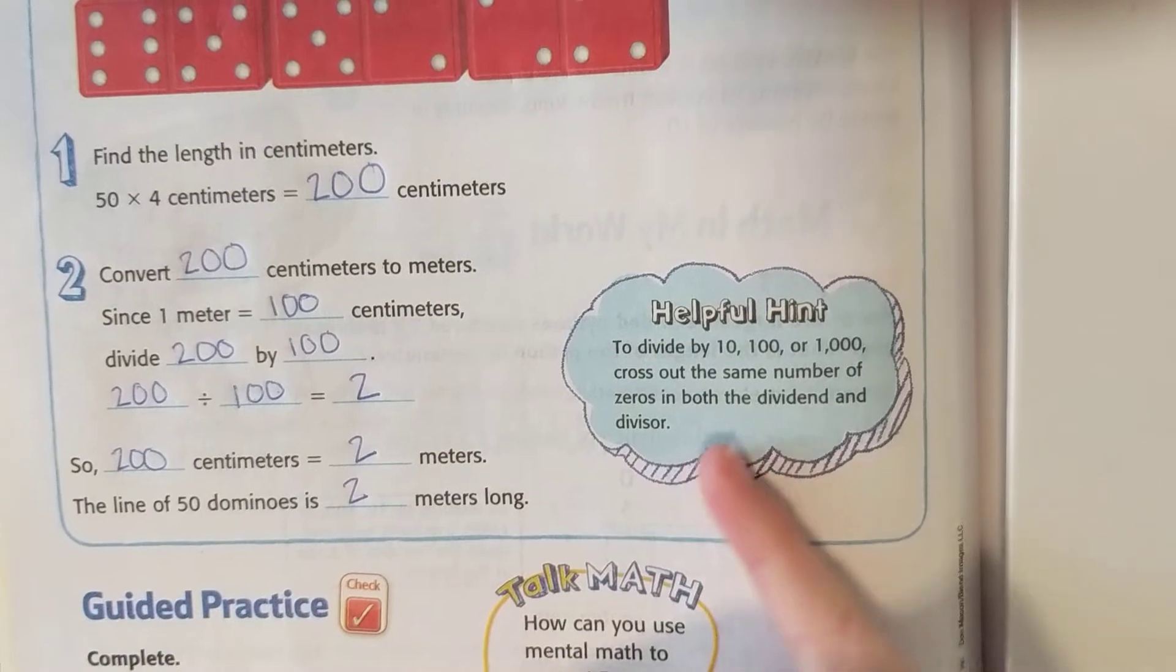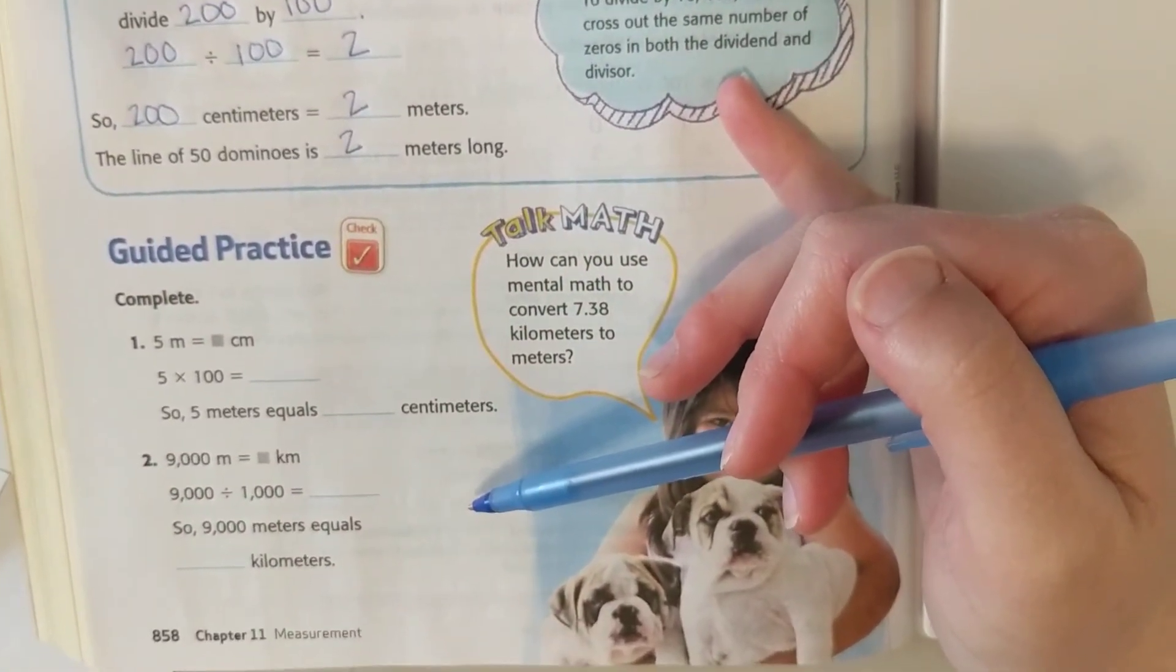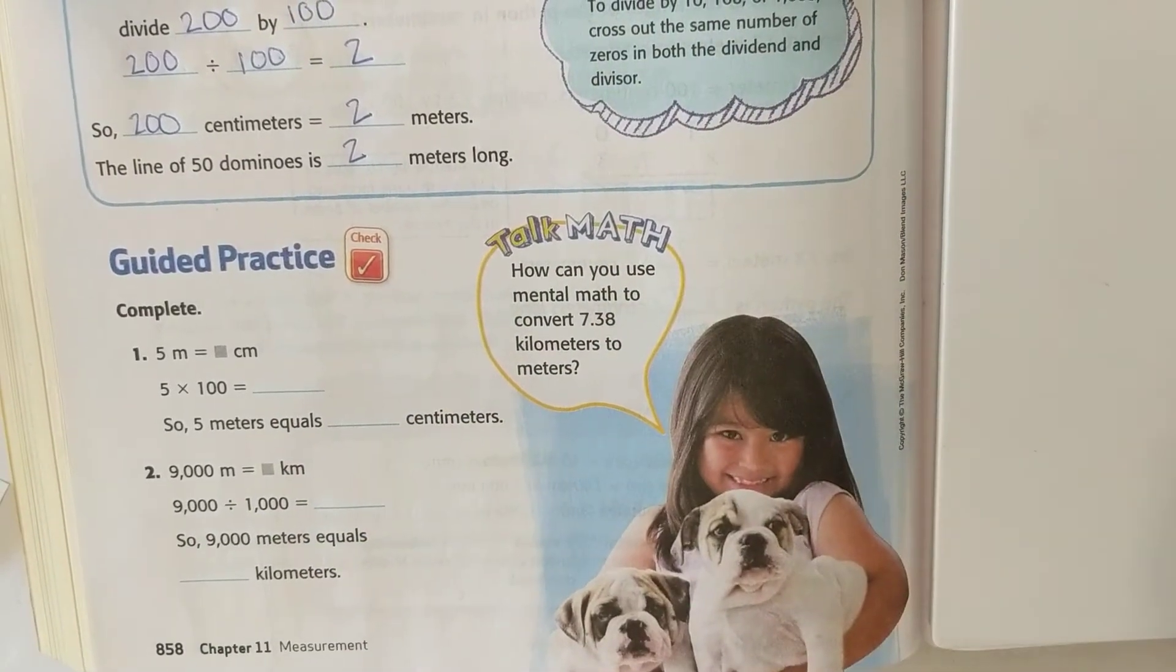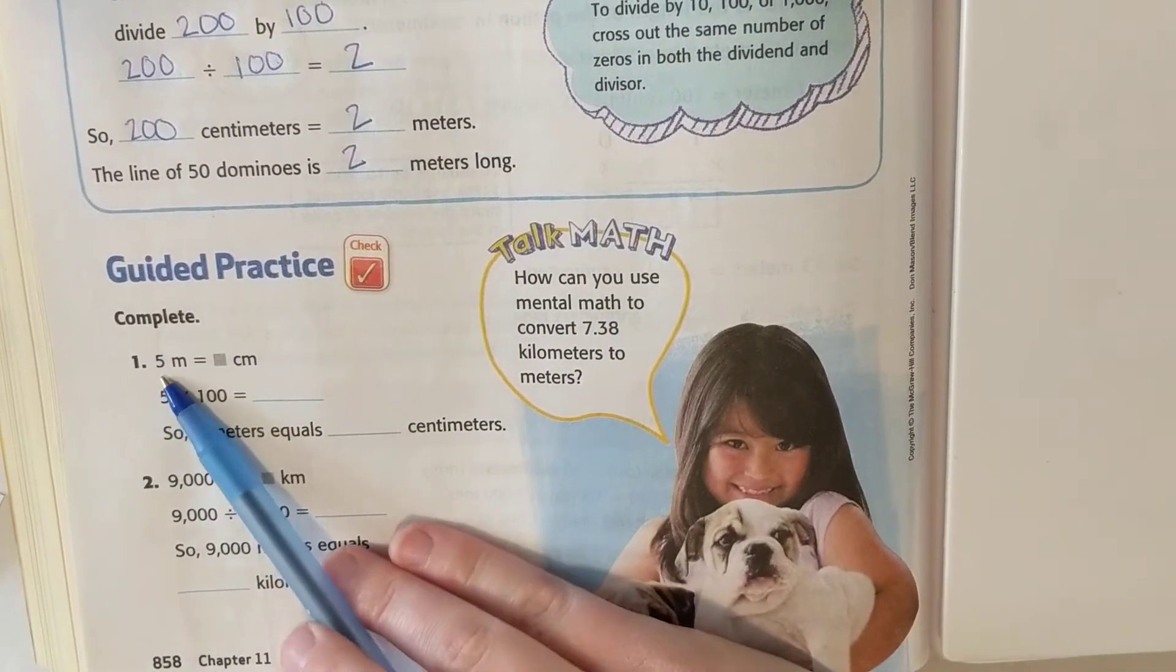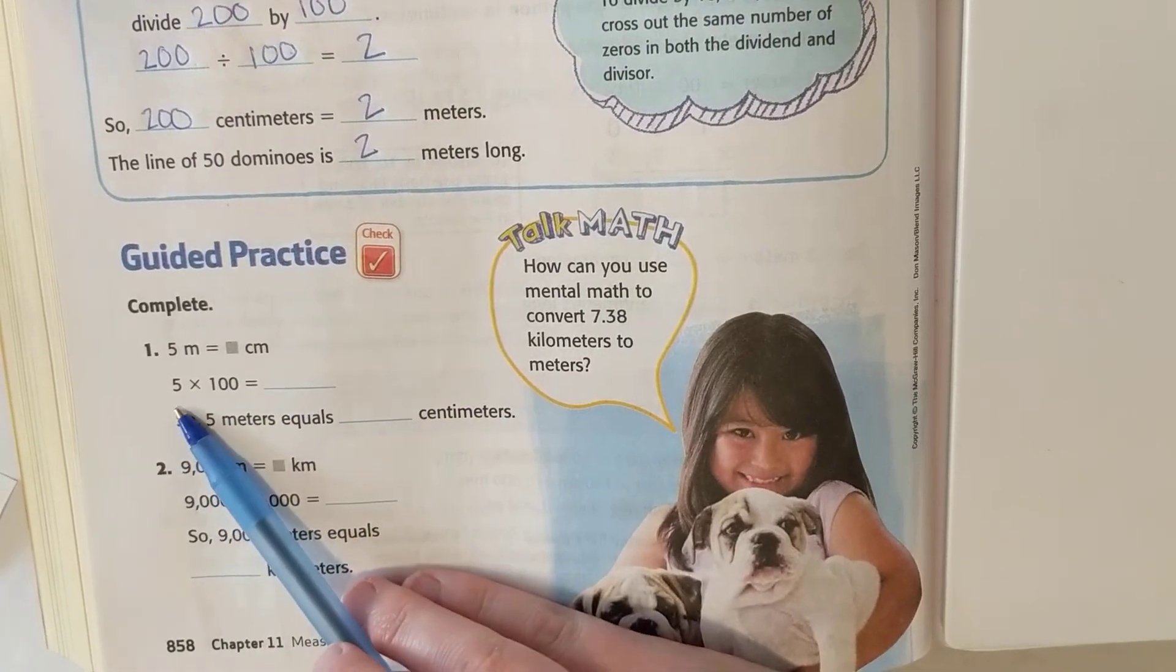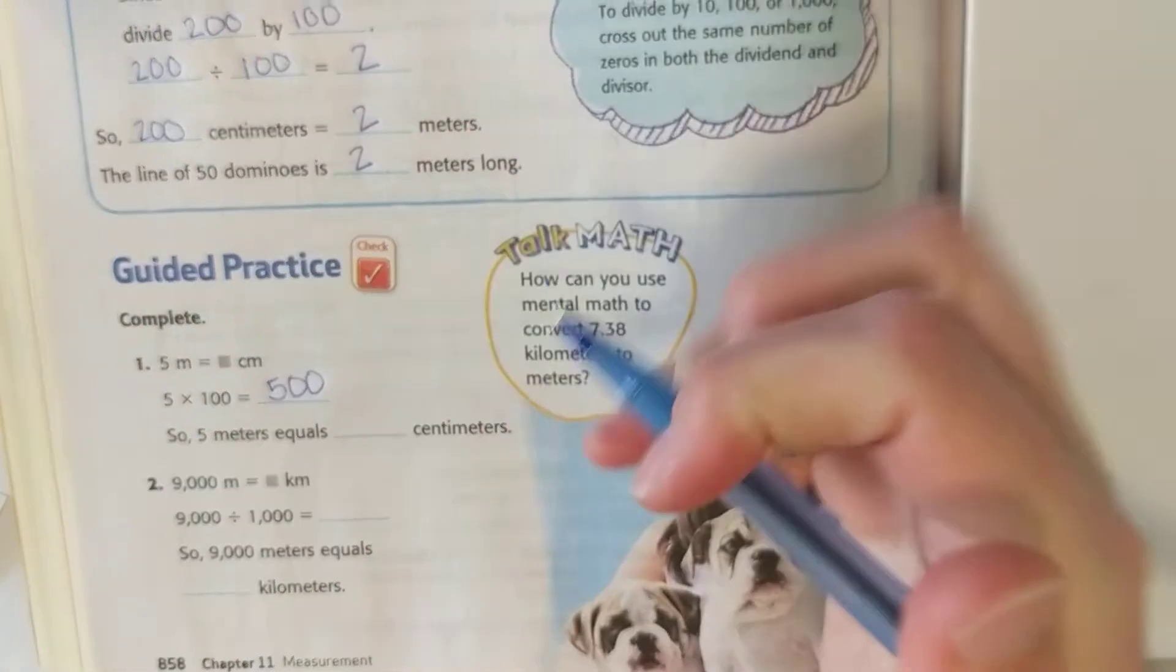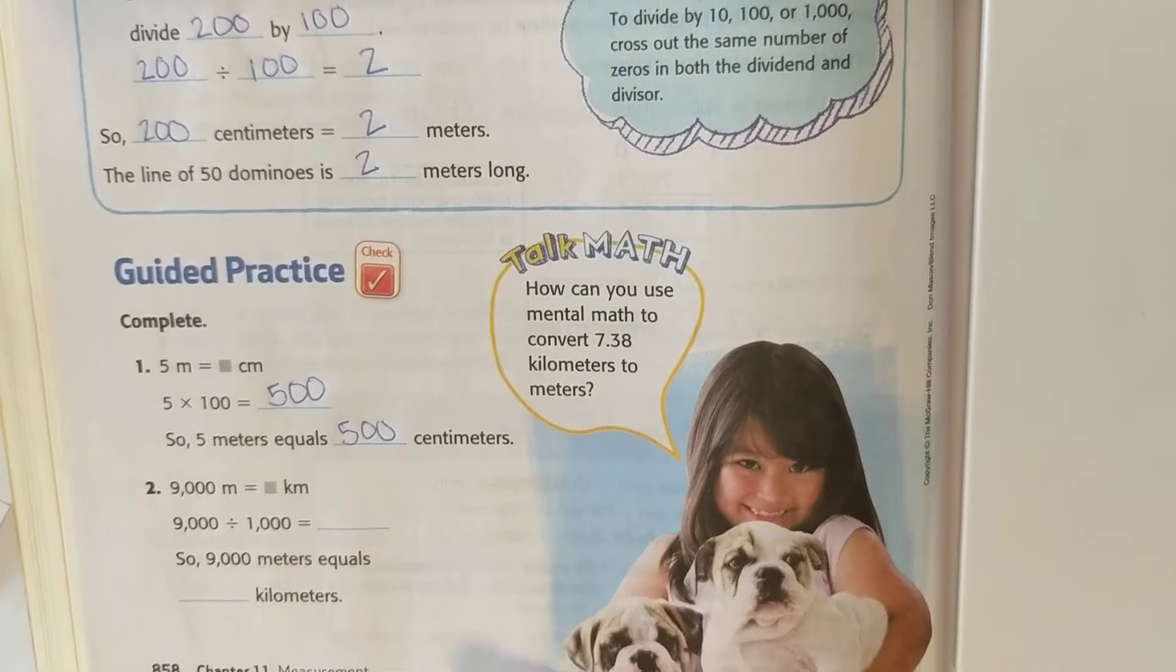I'd like you to try out these bottom two problems and then pause the video. Five meters, we're converting to centimeters. Since one meter is 100 centimeters, we're going to multiply to get to our smaller unit. Five times 100 is 500. So five meters equals 500 centimeters.